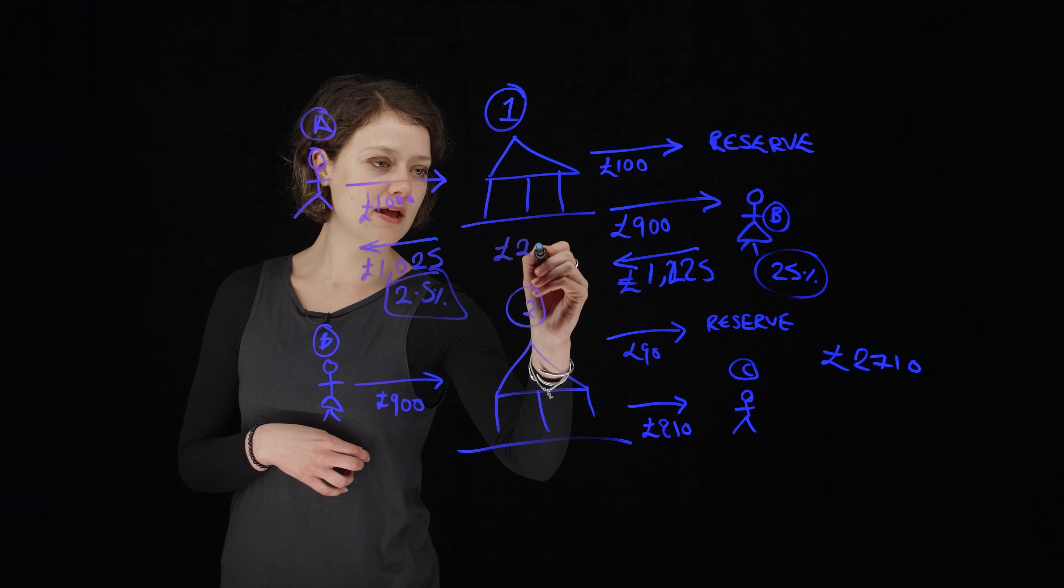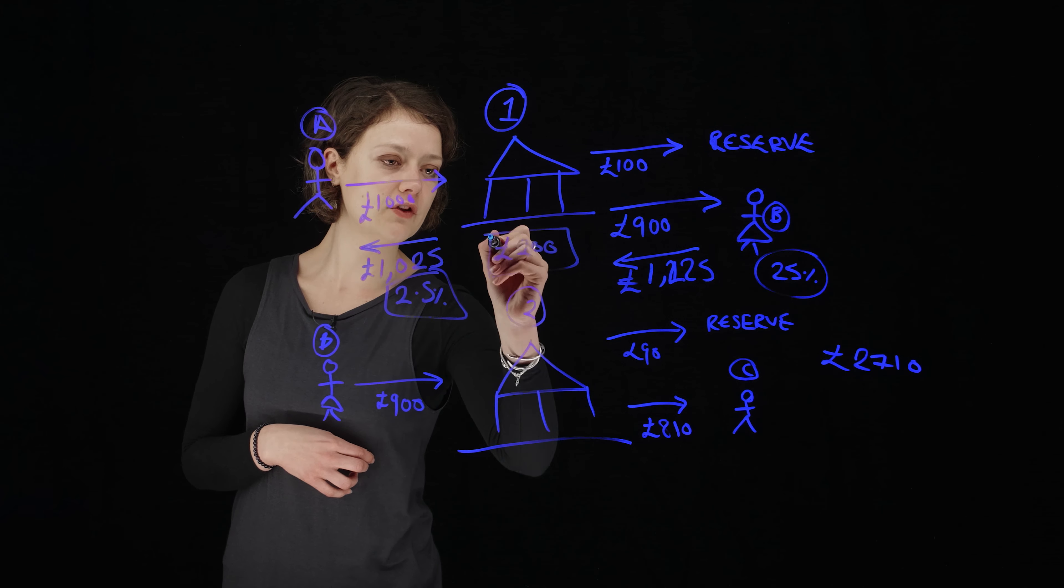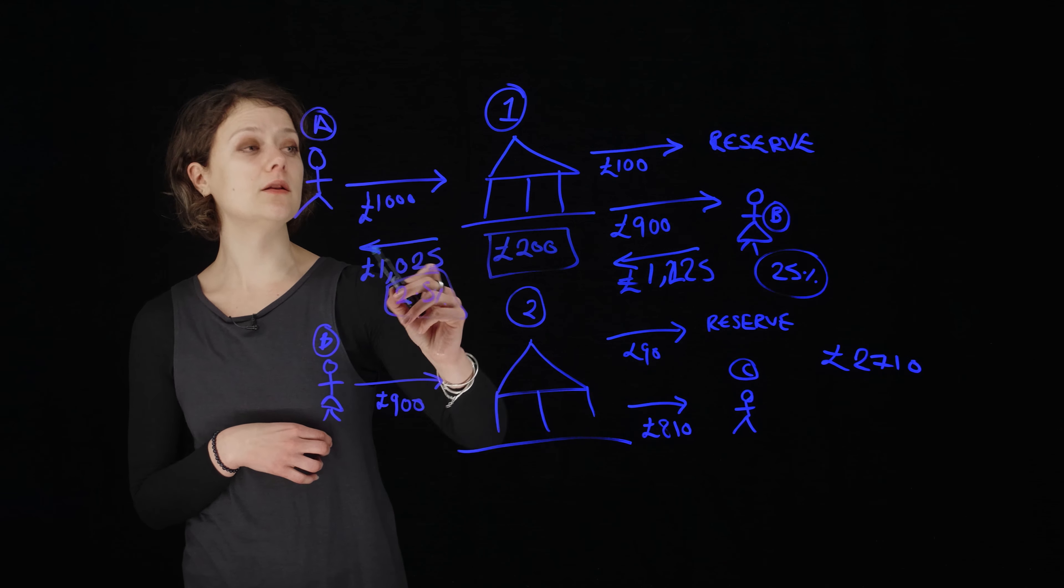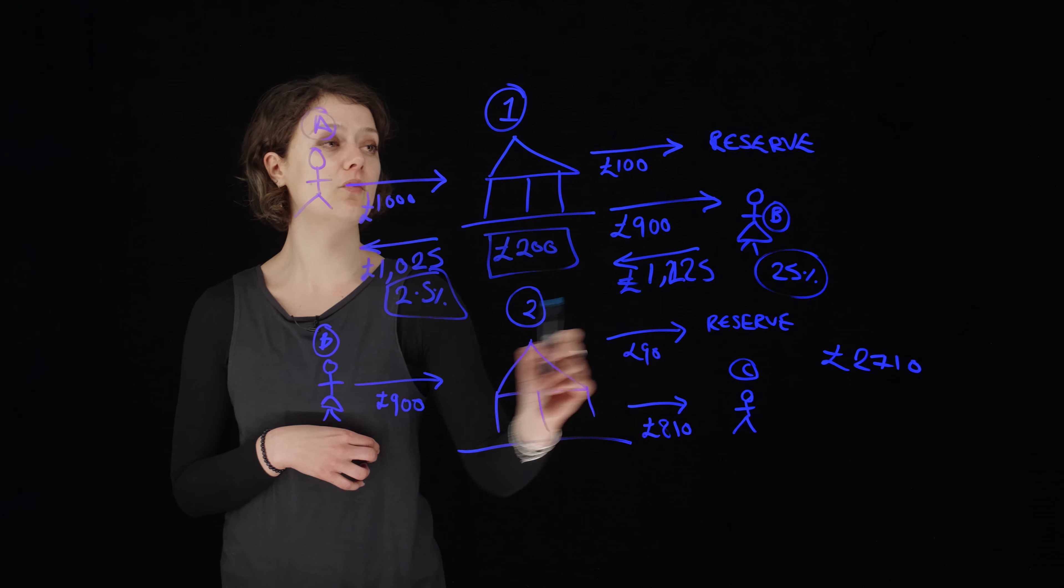And the bit in the middle is held by the bank. So the bank has made 200 pounds off this transaction basically by doing very little, basically just by facilitating this movement of money.